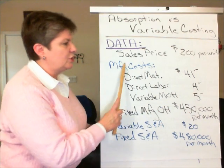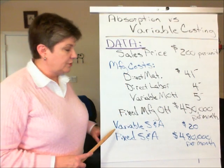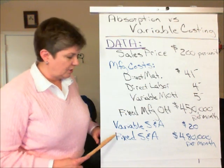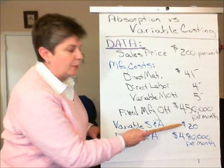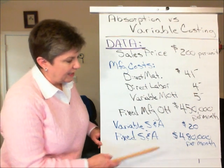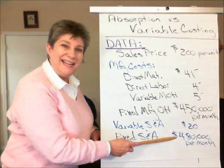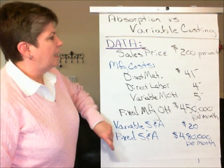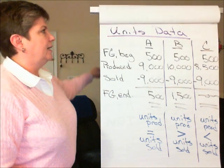In addition to the production cost, the company also incurs selling and administrative costs. The variable selling and administrative costs are $20 per unit, and the fixed selling and administrative costs are $480,000 per month.